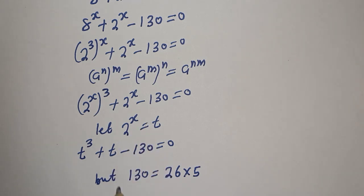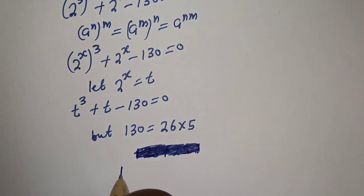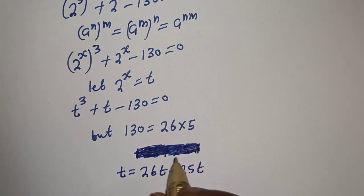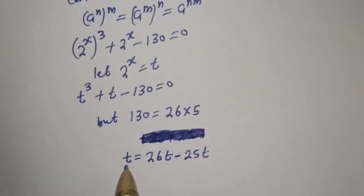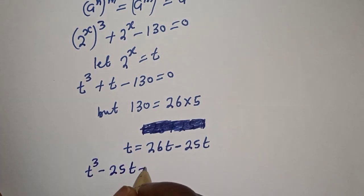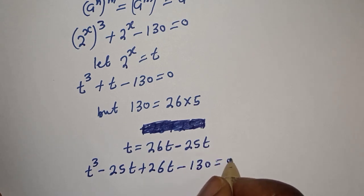The largest factor here is 26. If t equals 26, then we split the middle term: t raised to power t plus 26t minus 25t minus 130 is equal to 0.